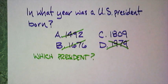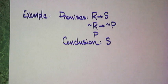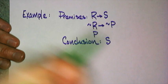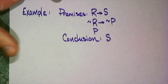Let's do an indirect proof using logic. Our premises are: if R then S; if not R then not P; and P. Our conclusion is S. An indirect proof is nothing more than a different way of arriving at the conclusion. We have in our bag of tools a direct proof, a conditional proof, and now an indirect proof. This one cannot be done conditionally because there is no antecedent — there's just a conclusion. So we have to do an indirect proof.